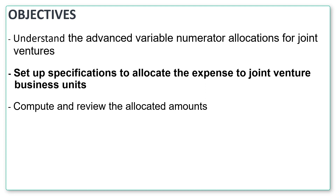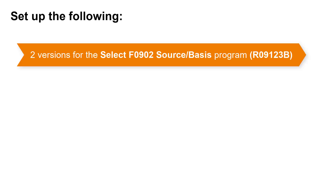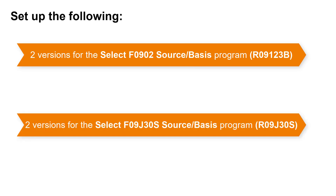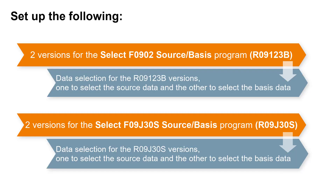To use the joint venture-based allocations, you must set up the following specifications. Set up two versions for each of these programs: the select F0902 source basis R09123B, and the select F09J30S source basis R09J30S. You will use the data selection of these versions to specify the source and basis data for the allocation.